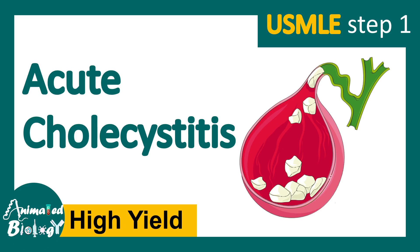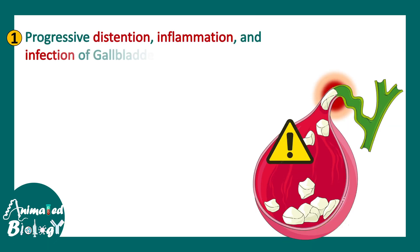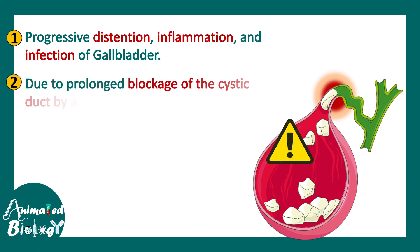In this video of USMLE Step 1 High Yield Series, we will learn about acute cholecystitis. Acute cholecystitis is a progressive distension, inflammation, and infection of the gallbladder. This occurs due to prolonged blockage of the cystic duct by a gallstone.